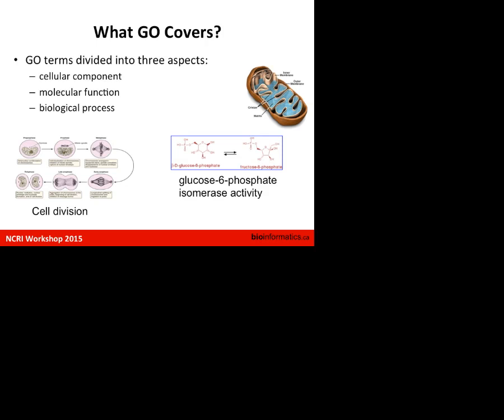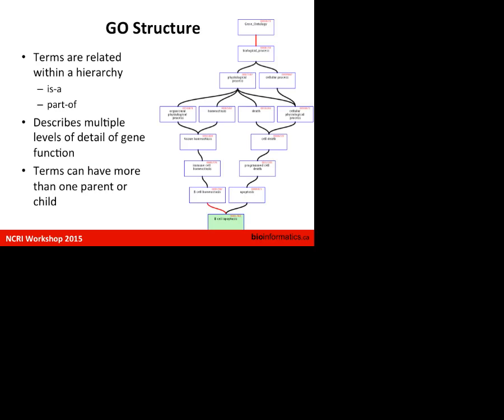Gene ontology has three major sections. Cellular component covers the localization of the genes you're talking about. Molecular function is about molecular interactions between ligand and receptor, catalytic reactions, and so on. Biological process covers things like cell division. For my research, biological process is the most useful one, but you can run enrichment analysis against all of them. The structure is very complicated, and in the majority of enrichment tests you're not going to see it directly.